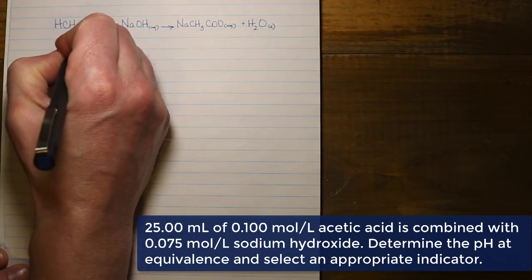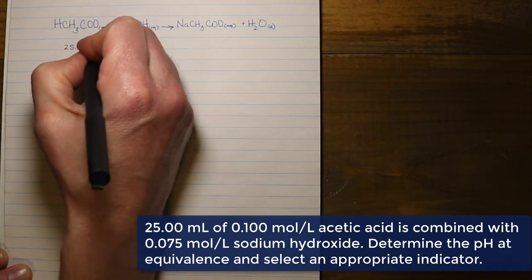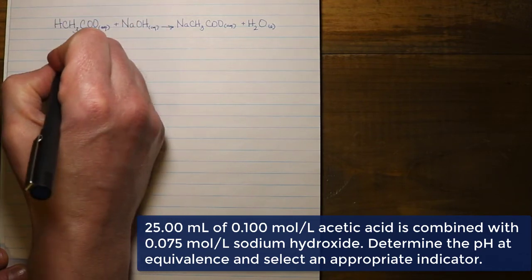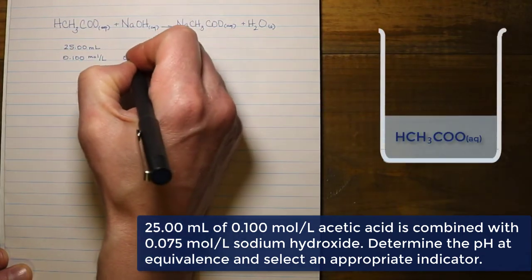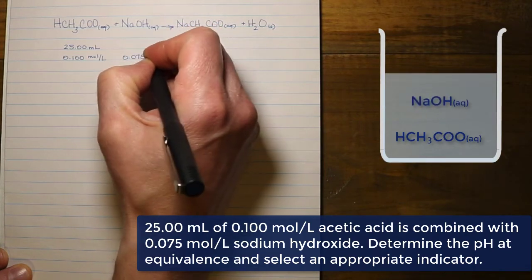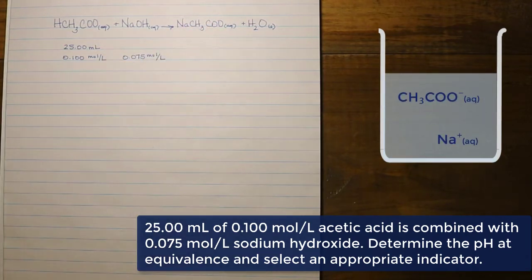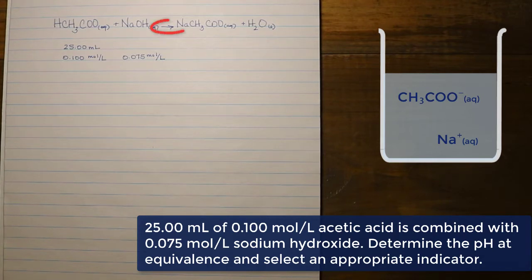We've been given the concentration and the volume of the acid, and we've been given the concentration of the base that is going to neutralize it. Since this is a neutralization reaction, once complete, no acid and no base remain — only product. There is nothing left in this reaction mixture except for salt and water, so the only thing that can potentially impact the pH is either the salt or the water.